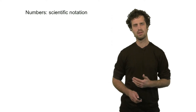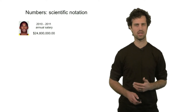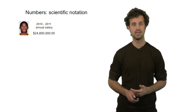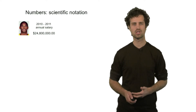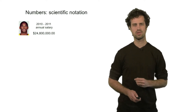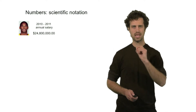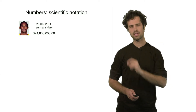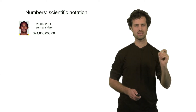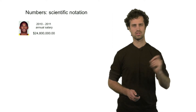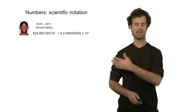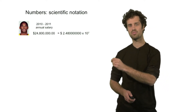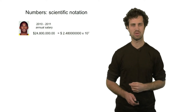Let me illustrate that by an example. For instance, the annual salary of a couple of people. This person here has a rather big annual salary: $24.8 million a year. So if you want to write this number in scientific notation, what we do is take the decimal point and move it all the way over to the position of the first digit. In this case, we slide the decimal point seven places to the left, giving us 2.48 times 10 to the 7. The 7 means the number of positions you've slid over the decimal point.